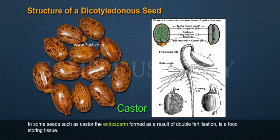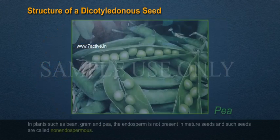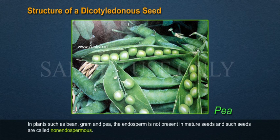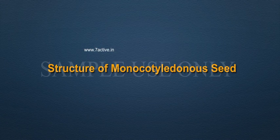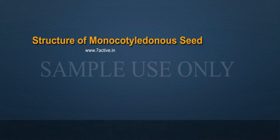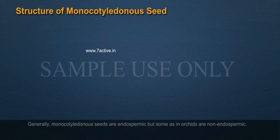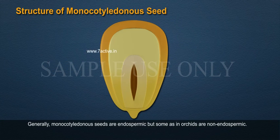At the two ends of the embryonal axis are present the radicle and the plumule. In some seeds such as castor, the endosperm formed as a result of double fertilization is a food-storing tissue. In plants such as bean, gram, and pea, the endosperm is not present in mature seeds, and such seeds are called non-endospermous.